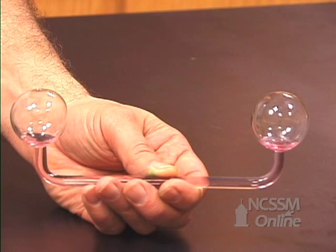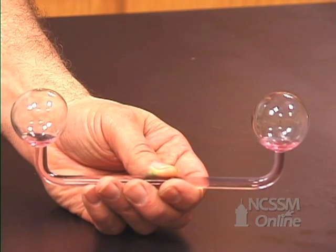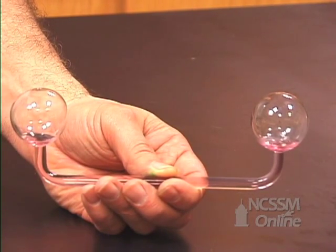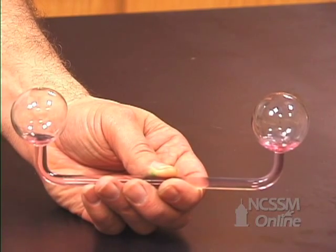This is a pulse glass, which is a demonstration of how vapor pressure changes with temperature. We have a volatile liquid that partially fills both bulbs.